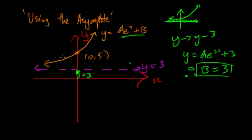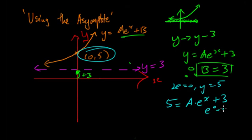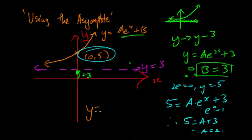Therefore b = 3 from the asymptote. Now we need to find a using the other point (0, 5): x = 0, y = 5. Substituting in: 5 = ae^0 + 3. Since e^0 = 1, we get 5 = a + 3, therefore a = 2.